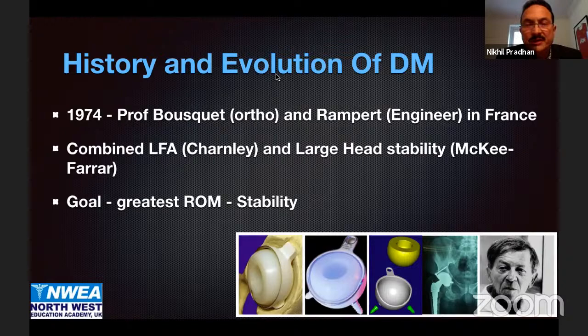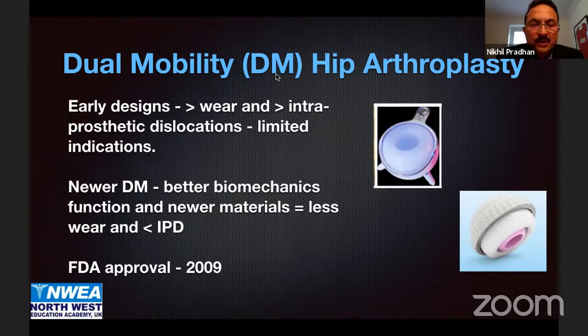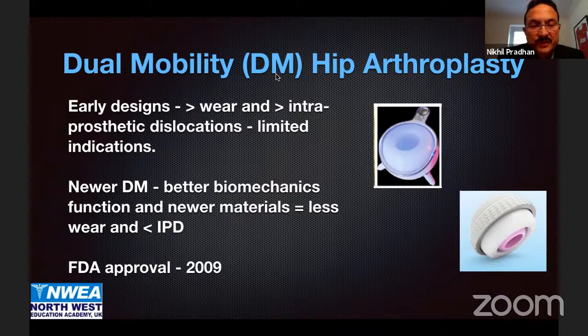The early designs had faults which led to increased wear and intra-prosthetic dislocations, limiting indications and use. With newer dual mobility implants, better biomechanics and newer materials — especially polyethylenes — have reduced the wear rate and the risk of intra-prosthetic dislocation. The FDA gave approval in 2009, which saw increased use in the US, and in mainland Europe, especially France, it's been used in large numbers.